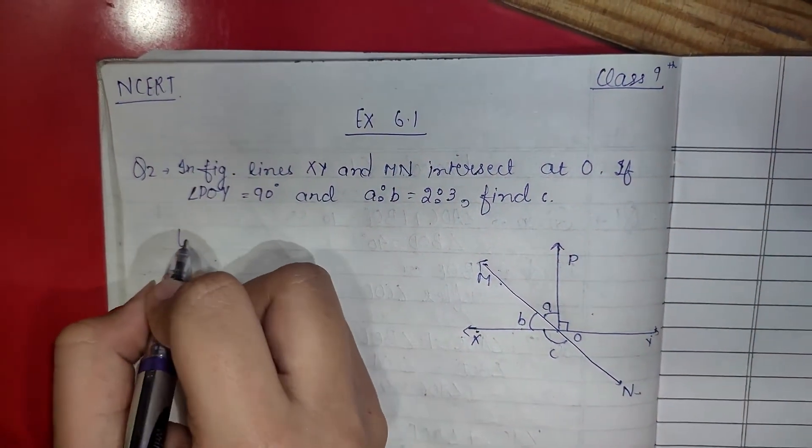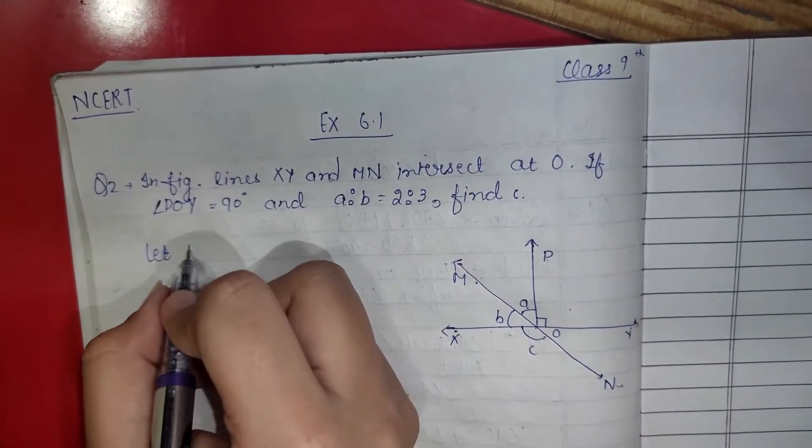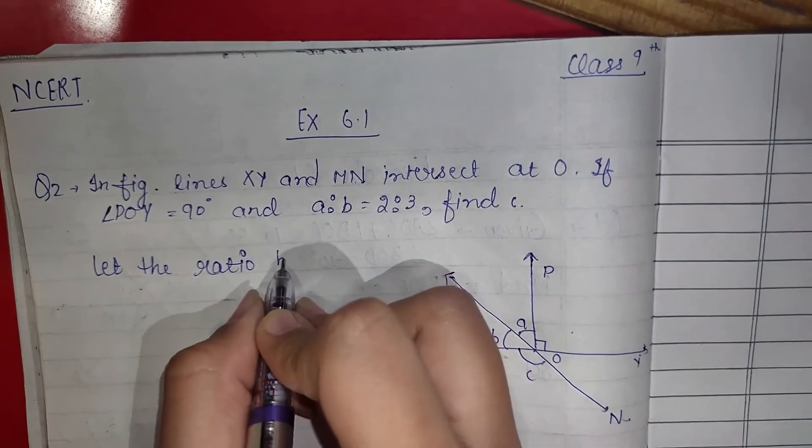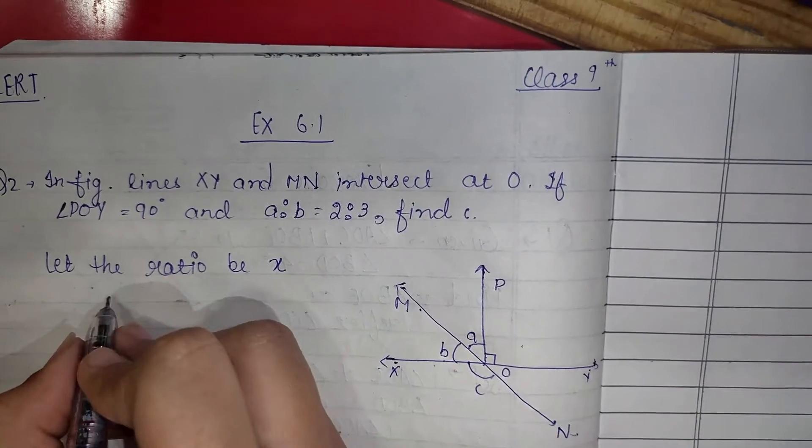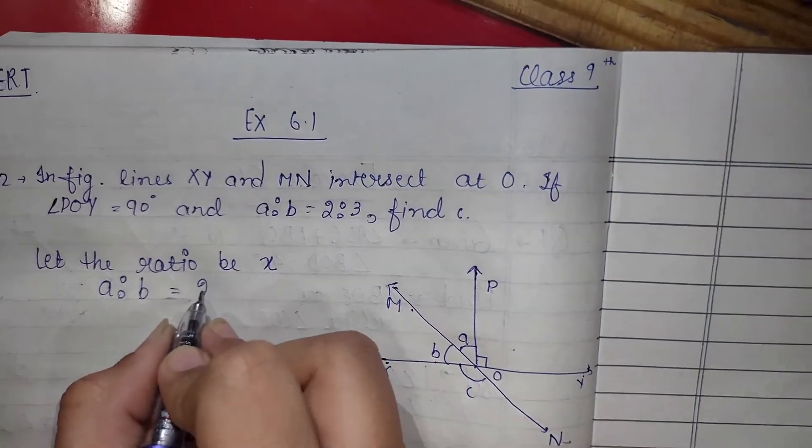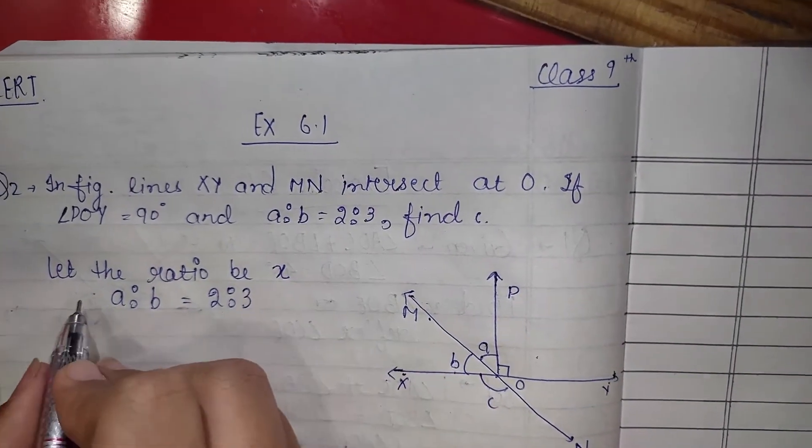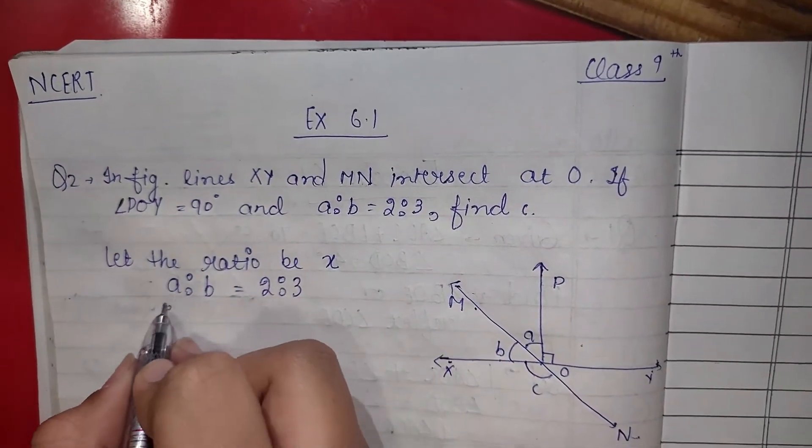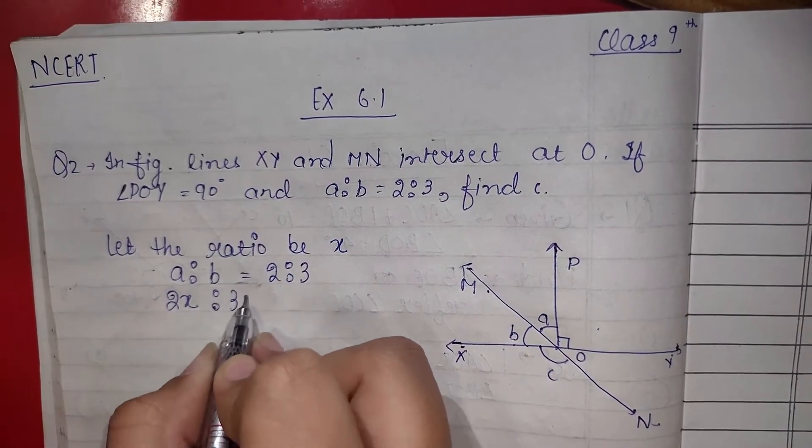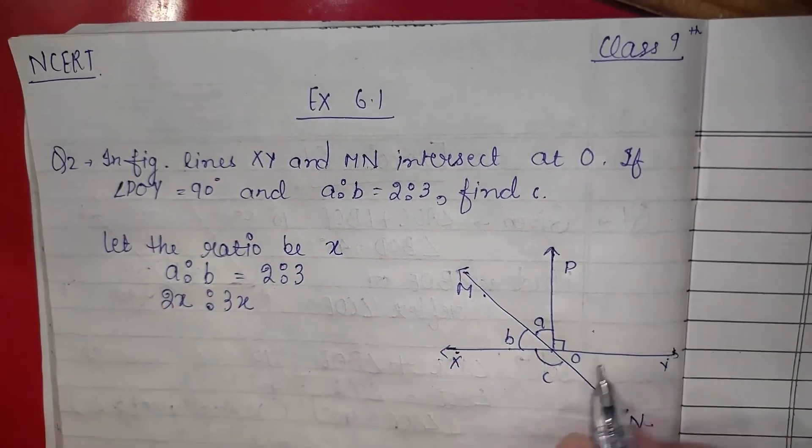So let the ratio be x. Angle a ratio b is equal to 2 ratio 3. So we will write it in the form 2x ratio 3x. So let's start.